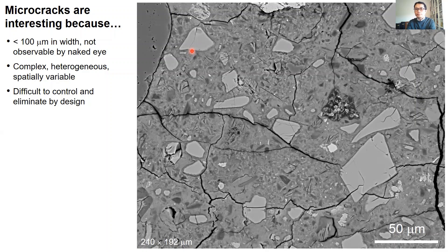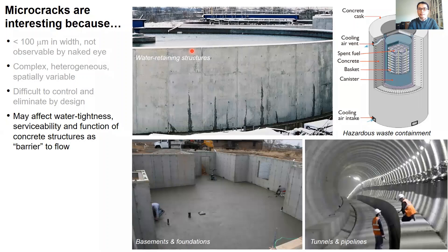In practice, the microcracks may affect water tightness, serviceability, and the function of many structures that rely on concrete's ability to act as a barrier to flow, such as water retaining structures, pipelines, basements, foundations, and tunnel linings. Furthermore, cementitious materials are used to store hazardous waste for very long periods of time, where potential leakage caused by microcracking could be disastrous.